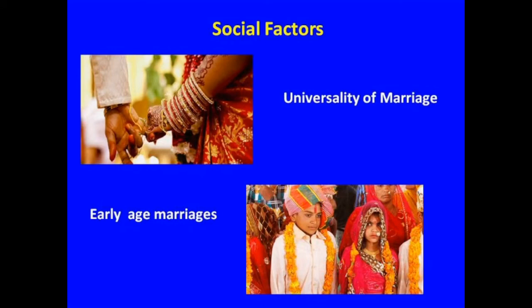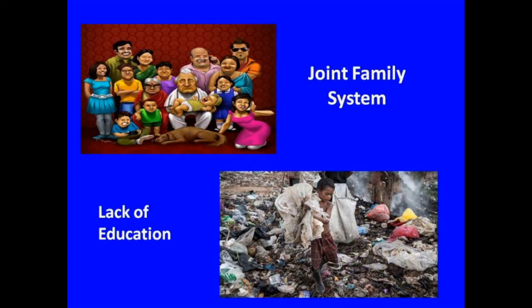Now we shall discuss the social factors. First, universality of marriage: marriage is both a religious and social necessity in India, and early marriages are common in rural areas, which is a significant factor for high birth rate. Next, joint family system: the joint family system induces young couples to have more children, since taking care of their requirements is not a problem in a joint family, thus increasing the birth rate. Finally, lack of education: education alone can change attitudes towards family, marriage, and birth of a child. Female illiteracy in particular is one of the major causes of high birth rate. Religious and social superstitions are also responsible for high birth rate in India.